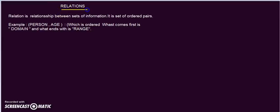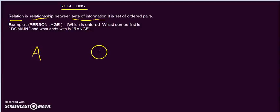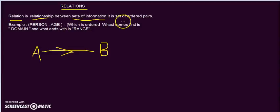In this session we will be discussing relations. What is a relation? A relation is nothing but a relationship between the sets of information. So if you have set A and set B, your relation is the relationship between the information in set A and set B. It is nothing but a set of ordered pairs.